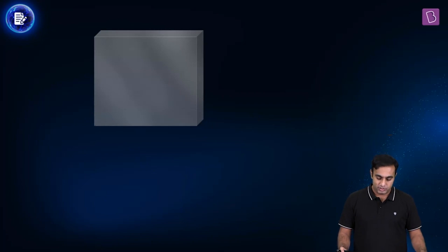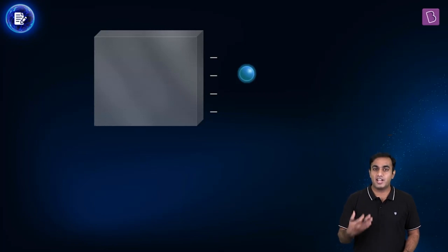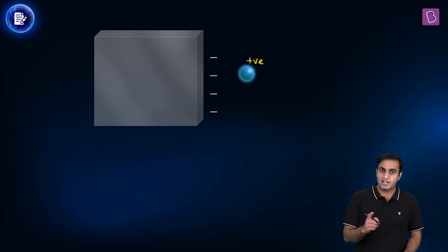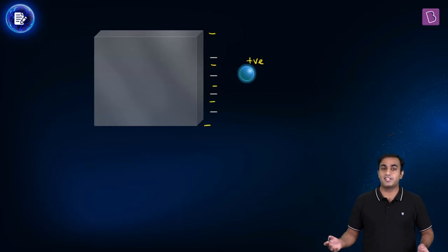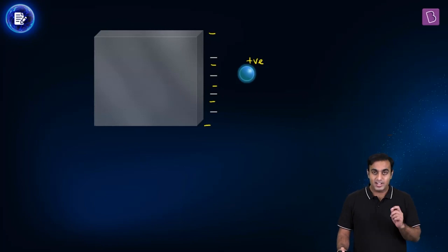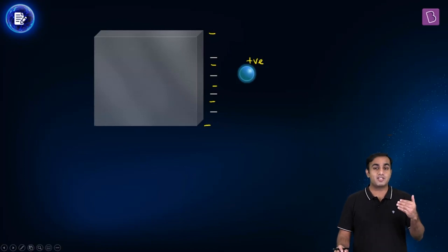Second point: you are looking at a point charge capital Q brought in the vicinity of the surface. The surface which is closer to this point charge should get a charge induced on it. Since this is a positive point charge, the charge induced on the nearer surface of the cube has to be opposite in nature, which is negative. It has to be a non-uniform distribution because the field intensity due to this point charge at different points on the nearest surface will be different.